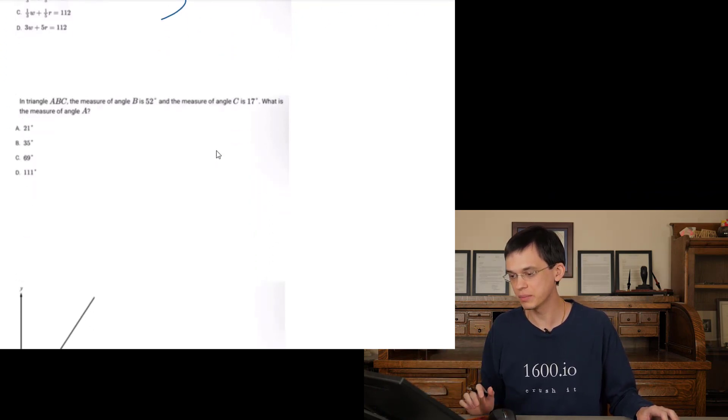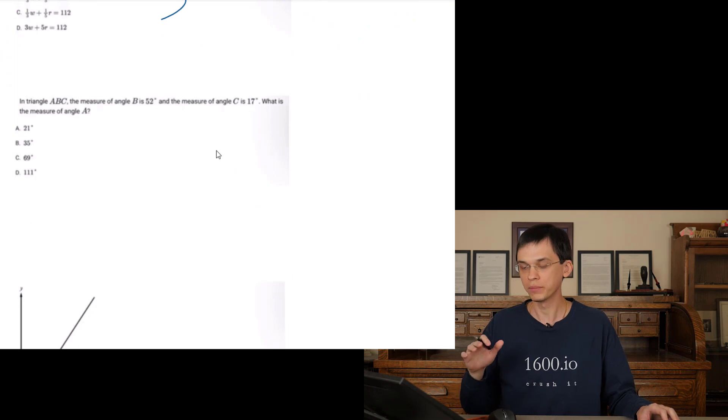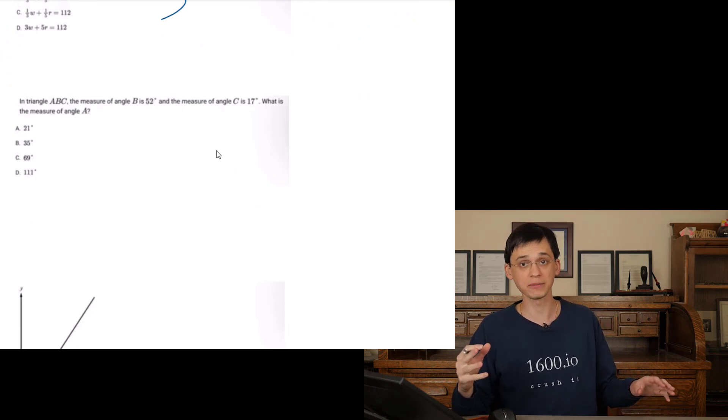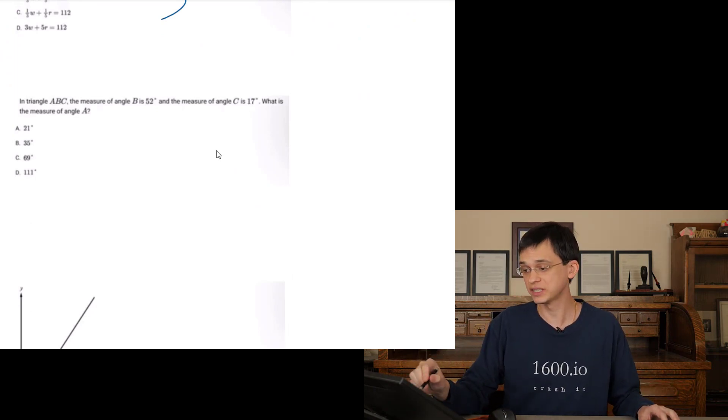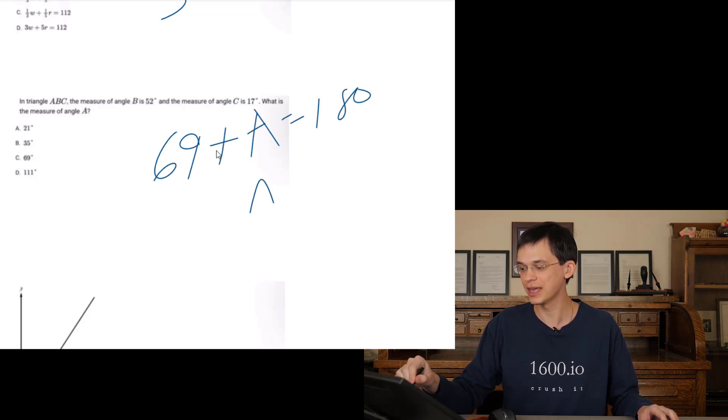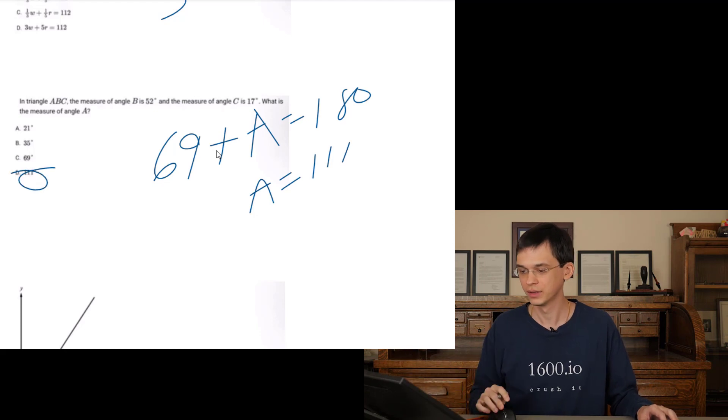In triangle ABC measure B is 52, C is 17. Three angles of a triangle have to add up to 180 degrees. So 52 plus 17 is gonna be 69 plus A equals 180. So A equals 111. D.